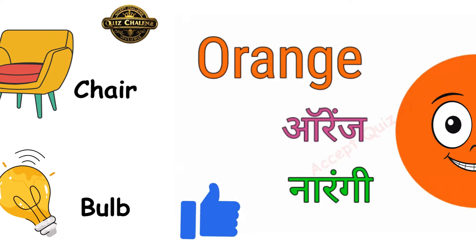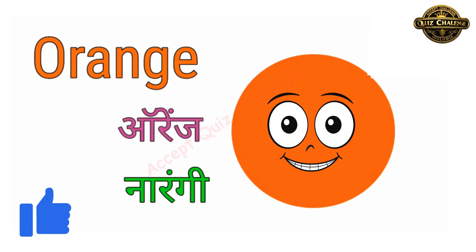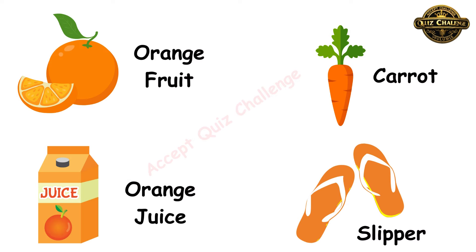This is the orange color, O-R-A-N-G-E. Orange means narangi. Let's see the example of orange color. Orange fruit is orange, carrot is orange, orange juice is orange and slipper also is orange.